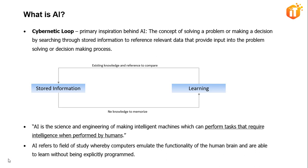AI is the science and engineering of making intelligent machines which can perform tasks that require intelligence when performed by humans. AI also refers to the field of study whereby computers emulate the functionality of the human brain and are able to learn without being explicitly programmed.